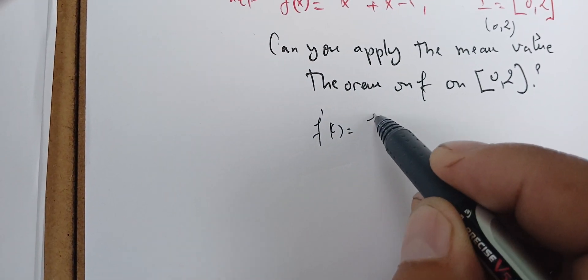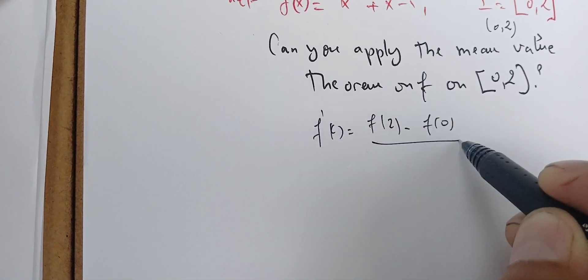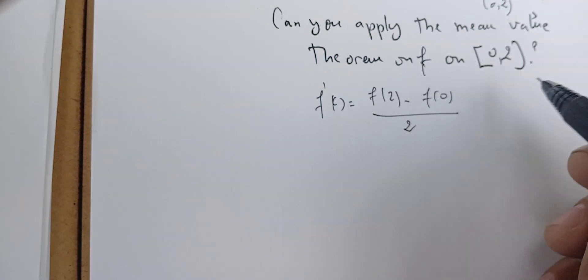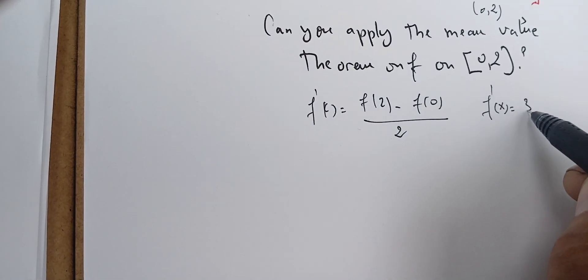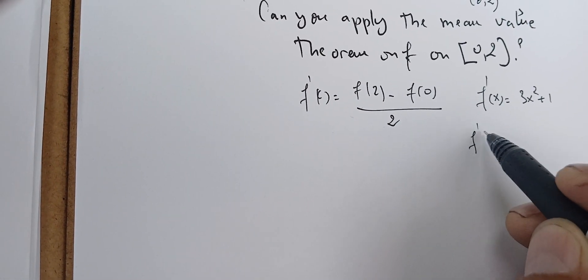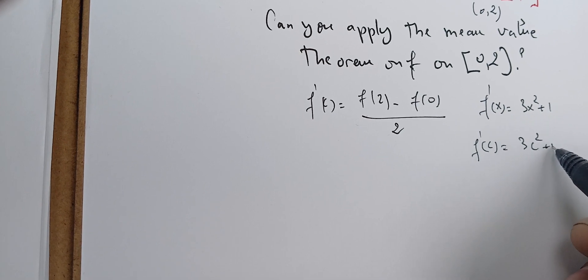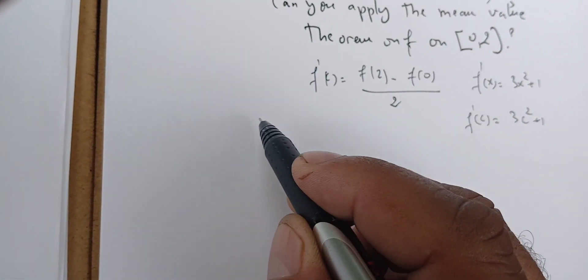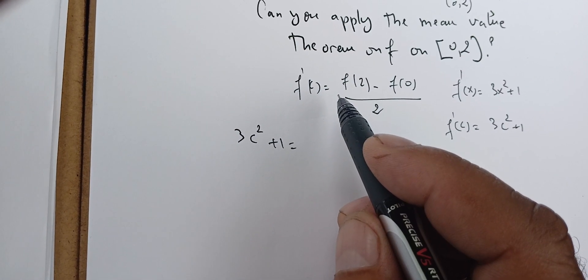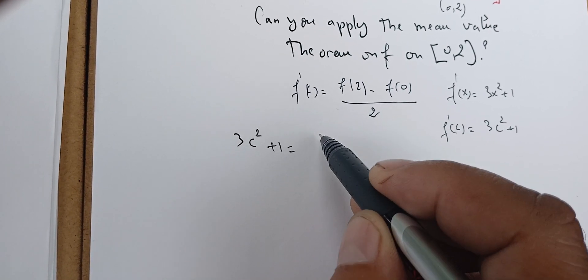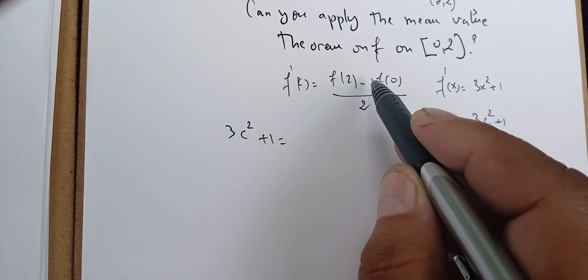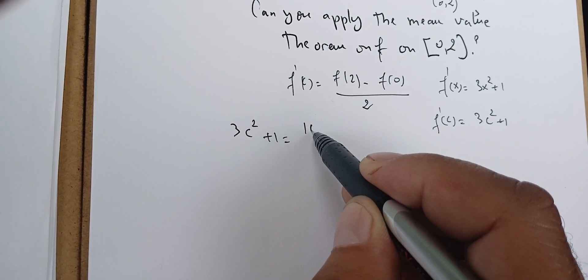So f prime of c is f(2) minus f(0) over 2 minus 0, which is 2. We can compute f prime of x, which is 3x² + 1. This gives us f prime of c = 3c² + 1. Applying this, we get 3c² + 1 equals f(2) = 10 minus f(0) = 1, so that's 10 over 2, which equals 5.